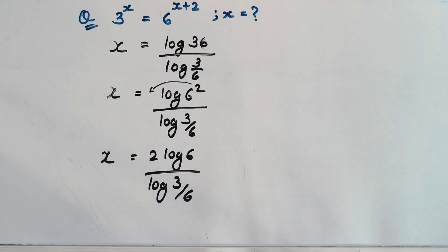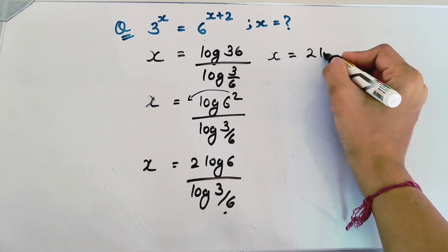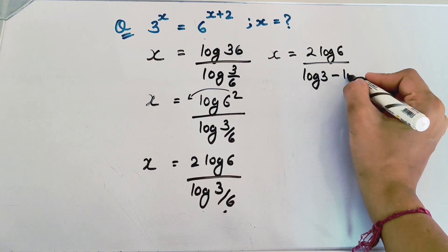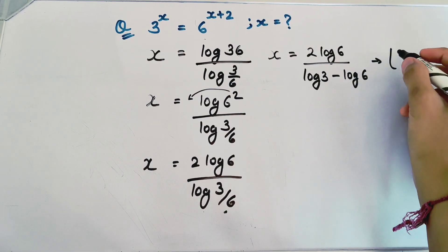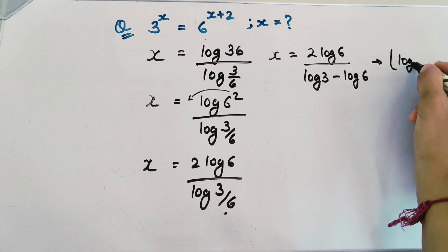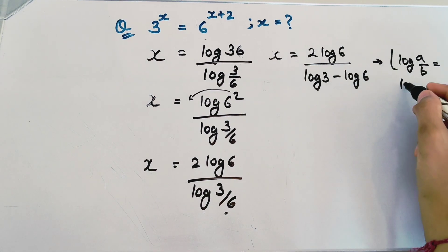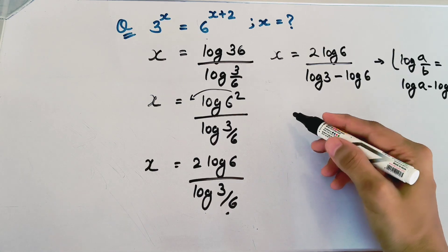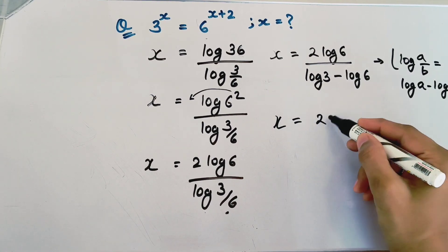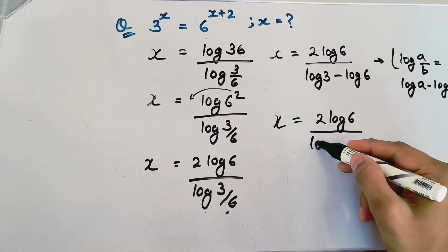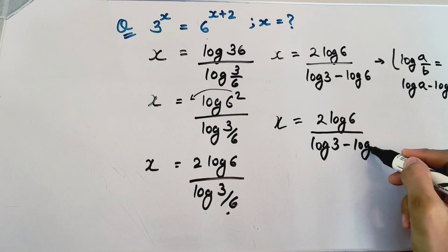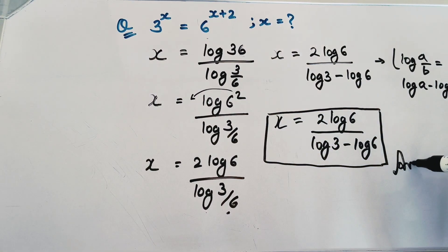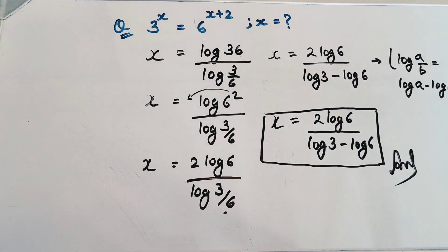So x equals 2 log 6 divided by log 3 minus log 6, applying the logarithm rule that log a divided by b equals log a minus log b. This is our final answer. I hope you like the video. Please do share and subscribe. Bye-bye.